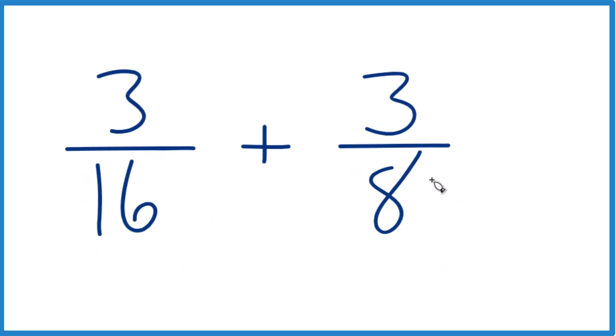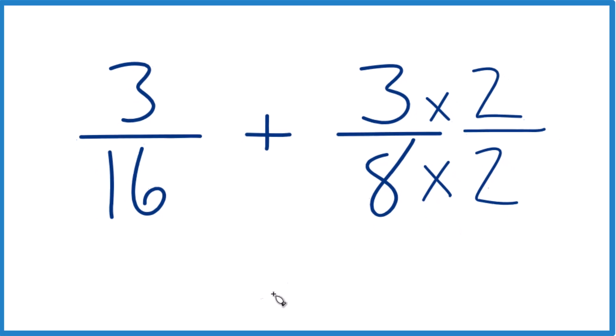So let's multiply 8 times 2 because that'll give us 16. We do need to multiply the numerator by 2 as well because 2 divided by 2 is 1. We're just multiplying by 1. We're not going to change the value, just the way it's written.